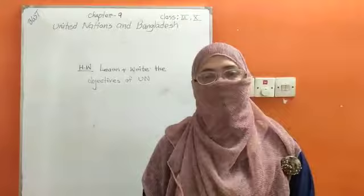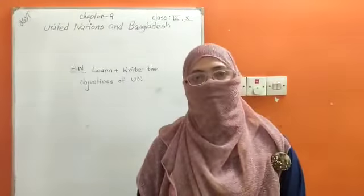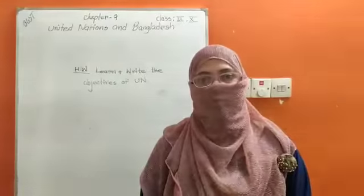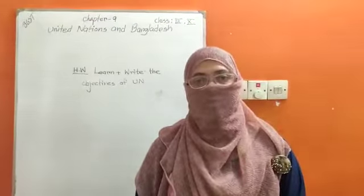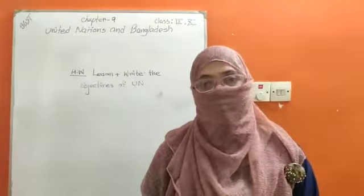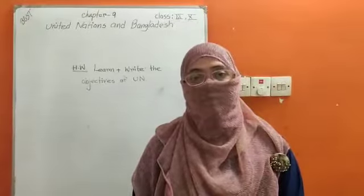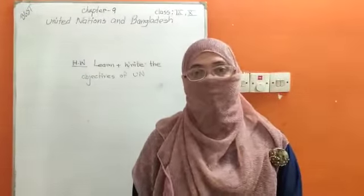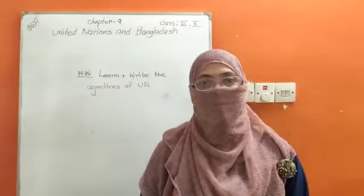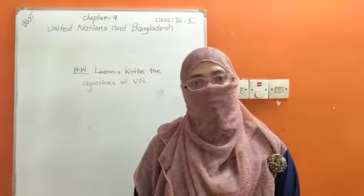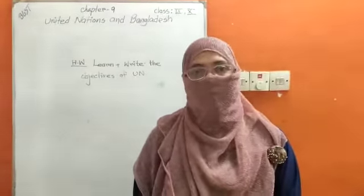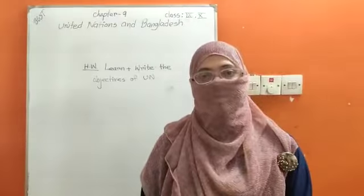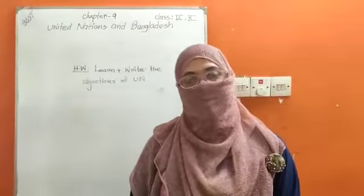Last class we read about United Nations and the background of United Nations, how it was formed. We know that after the Second World War, the world scenario became worse. At that time, the world leadership became anxious to form an international organization to bring peace for the world. In that perspective, on 24th October 1945, United Nations was formed. The headquarter of United Nations is in New York, and at present there are 193 members. Every year, 24th October, we observe as the United Nations Day.